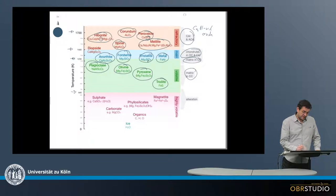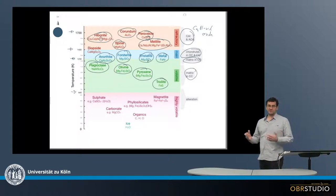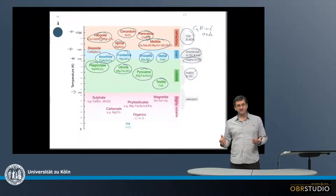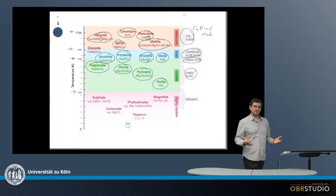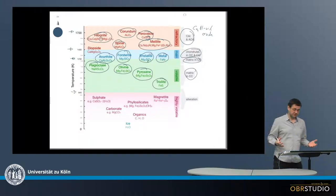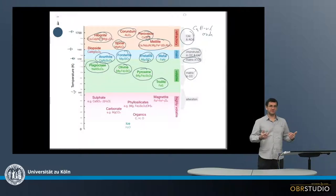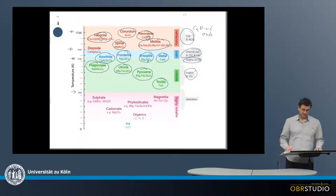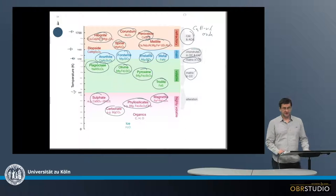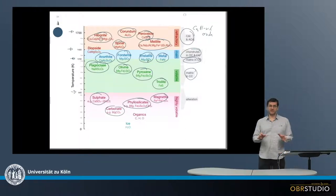Below about 640 Kelvins, there are elements that can condense from the gas, but these are often formed due to alteration on the parent body. If found in the meteorite, it's not easy to say whether these minerals just condensed from the gas, but very likely these are alteration products—sulfates, magnetite, phyllosilicates, carbonates, and so on. These minerals typically contain lots of water, like OH or in some cases H2O.